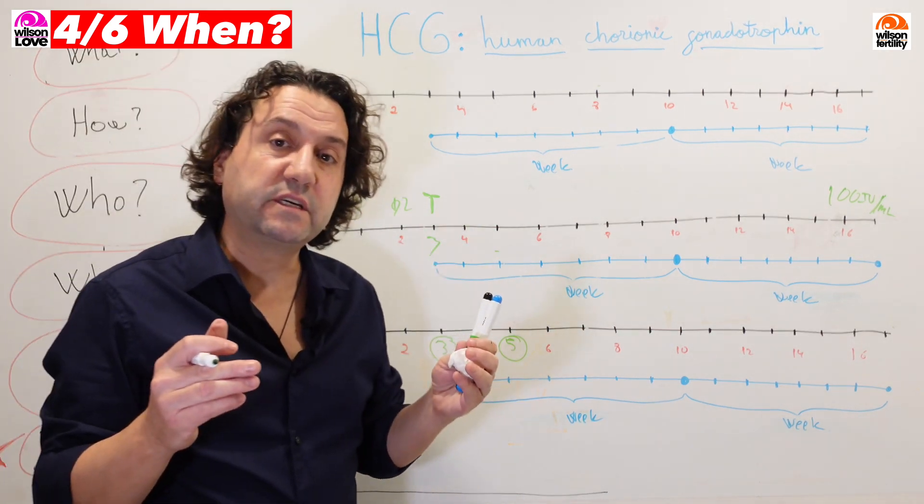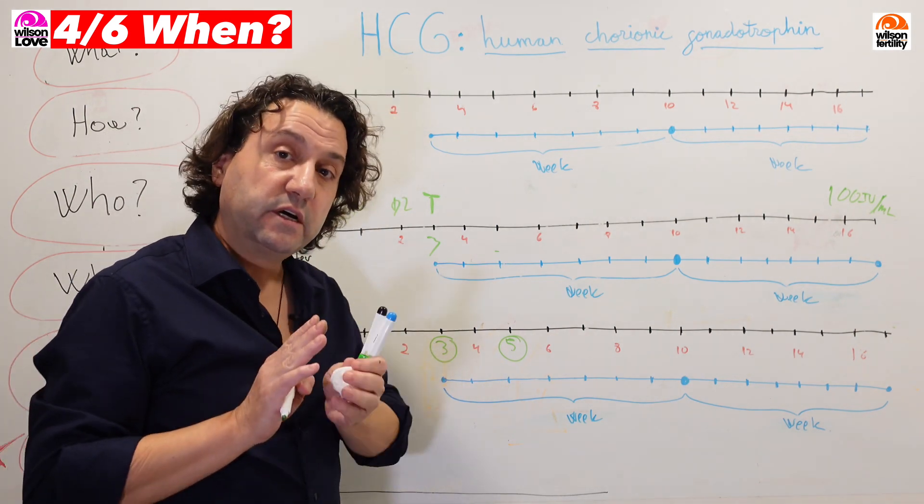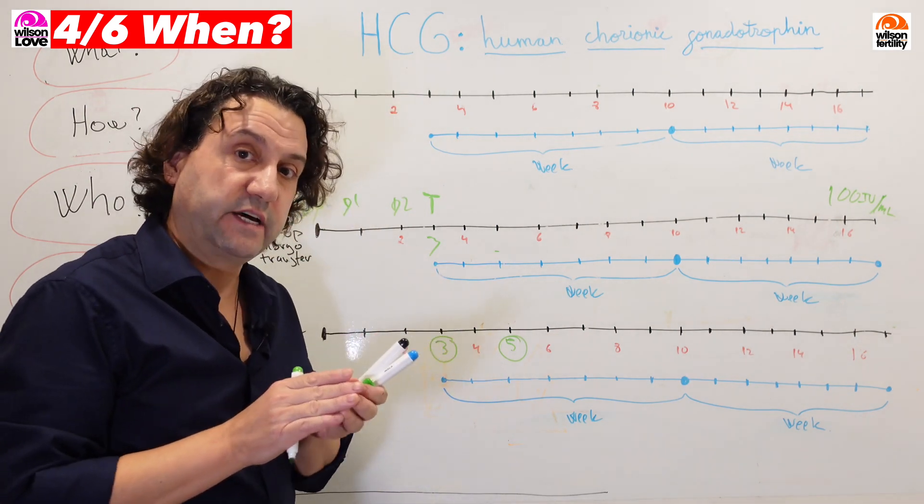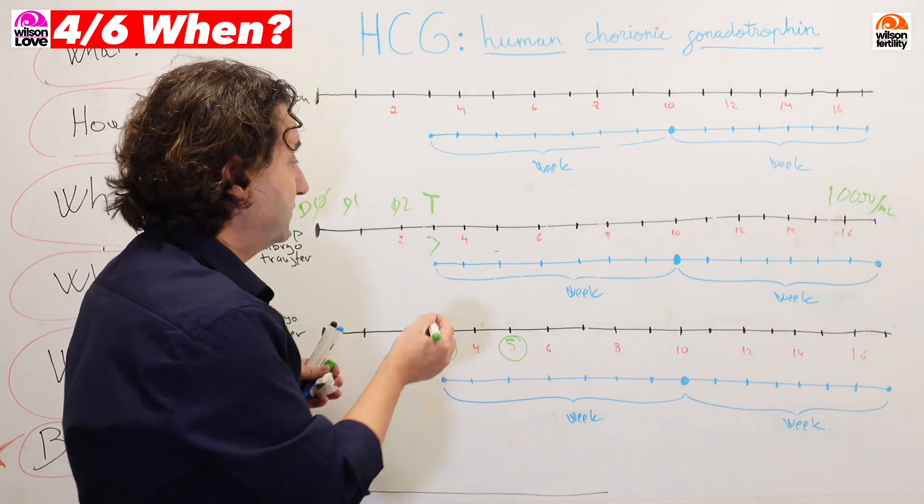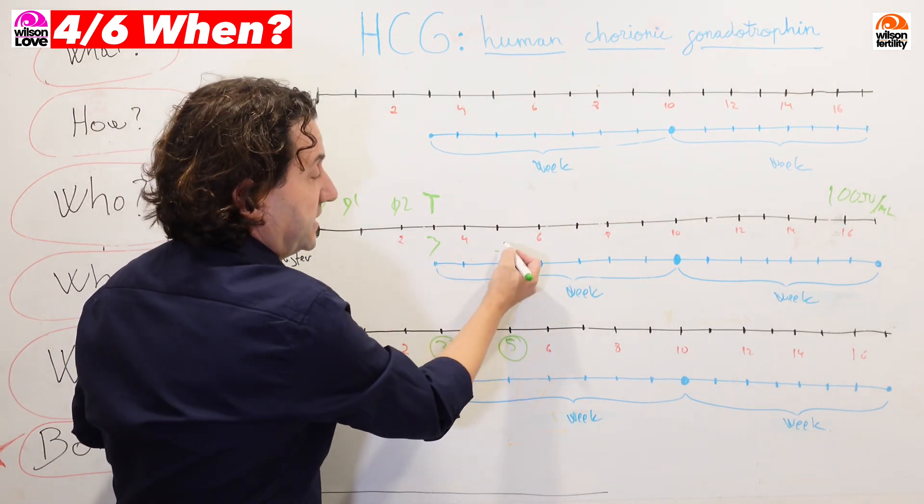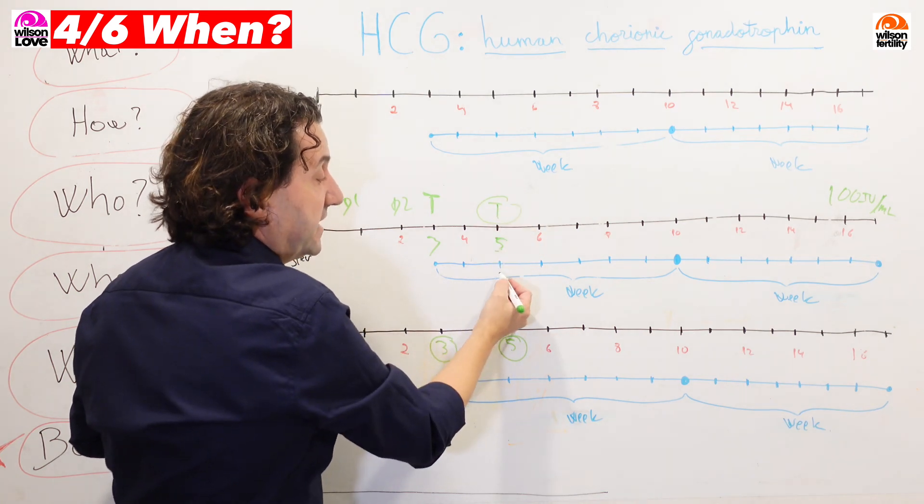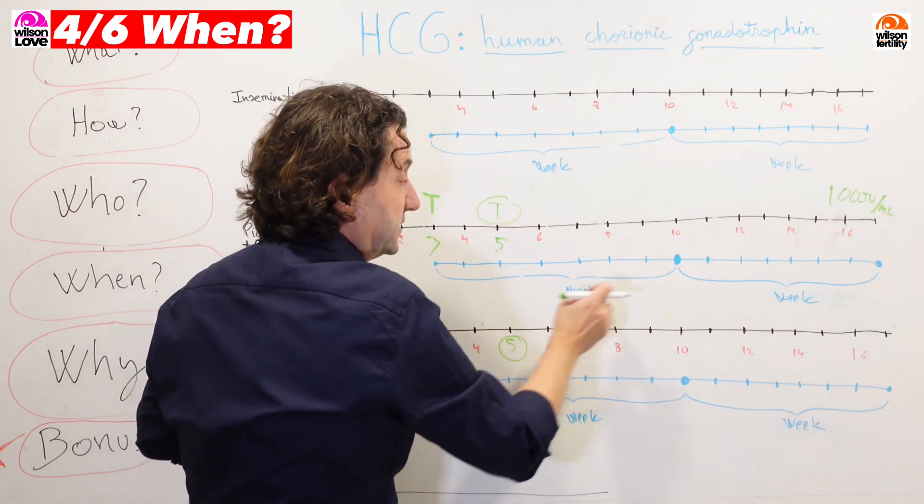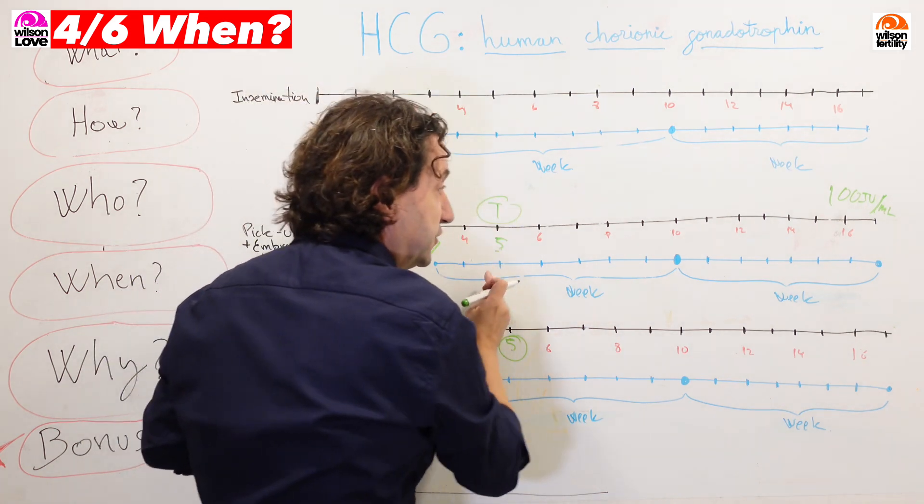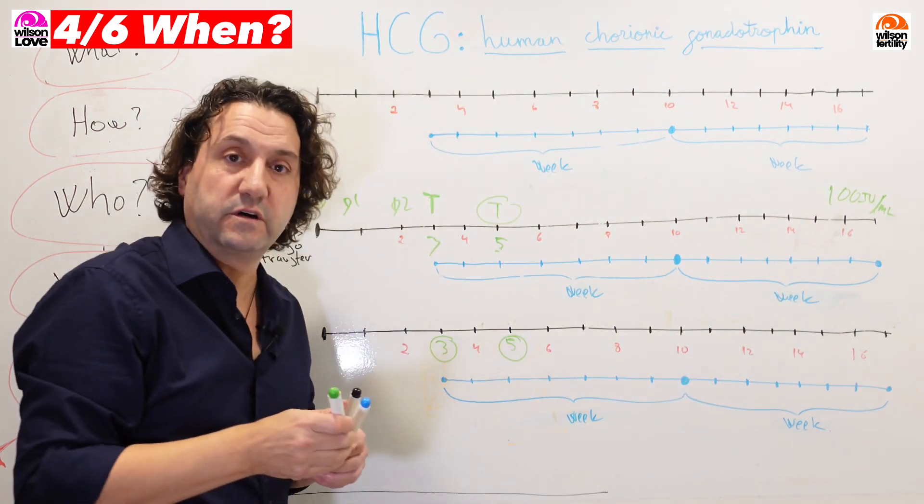What happens if the embryo is on day five? You just have to decrease two days. Eliminate two days of the waiting period. So day five will be here. If you are transferred on day five, then it's not going to be two weeks. It's going to be 12 days. After 12 days, you're going to find the same value.